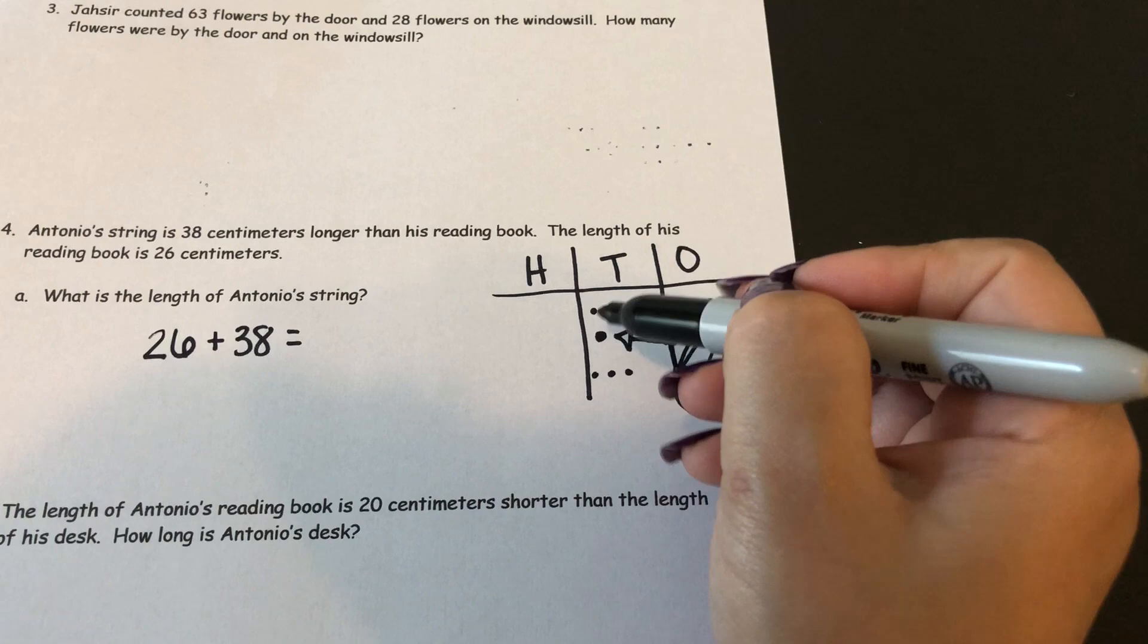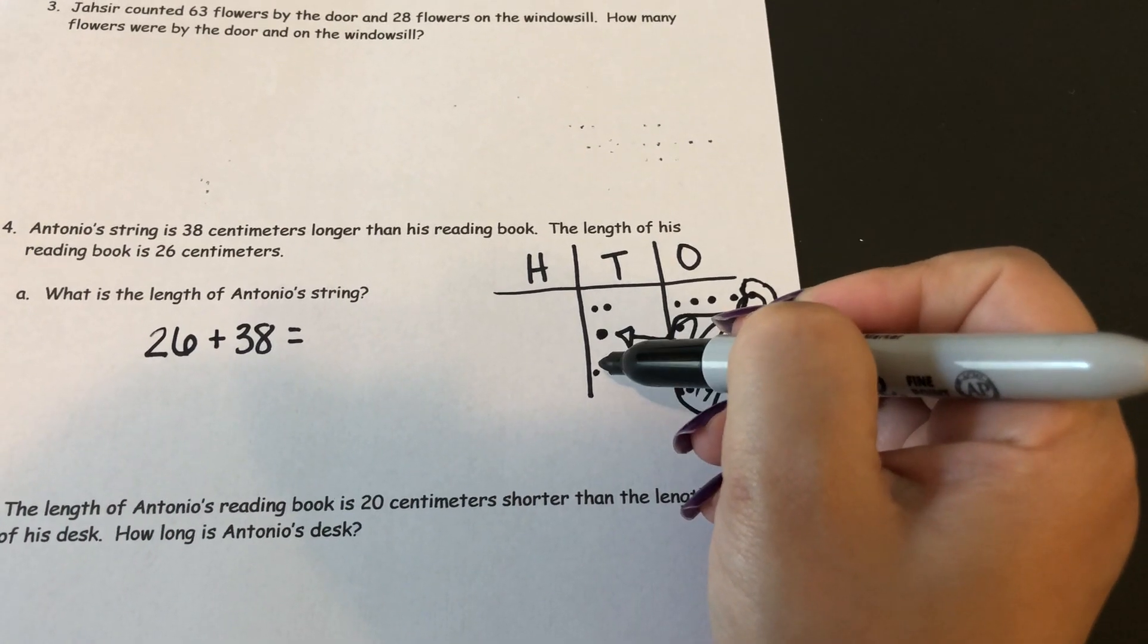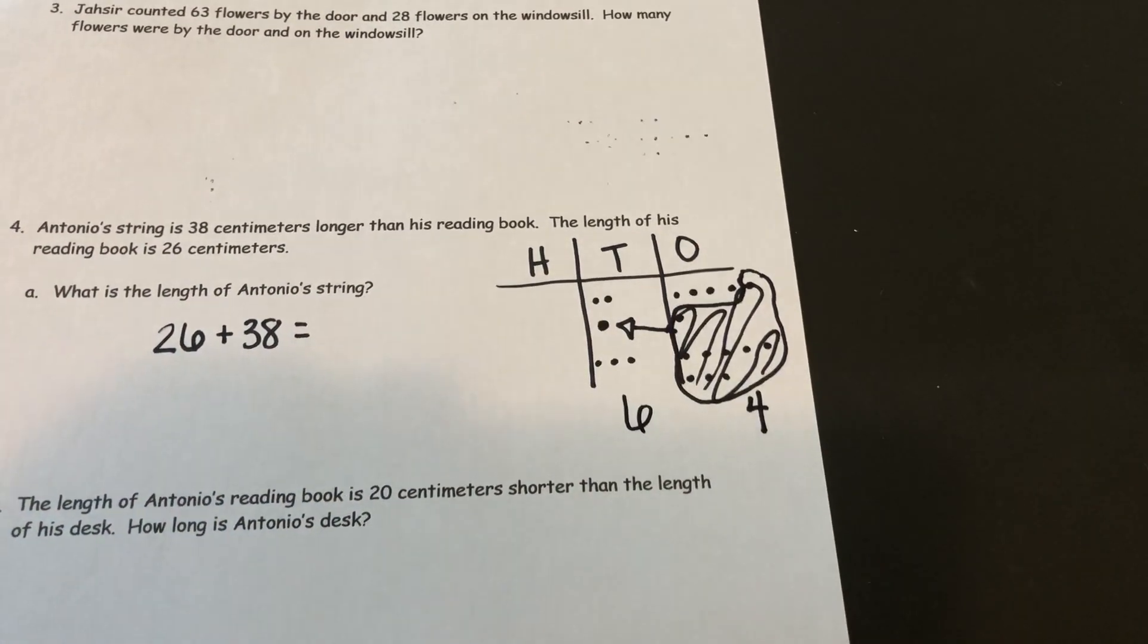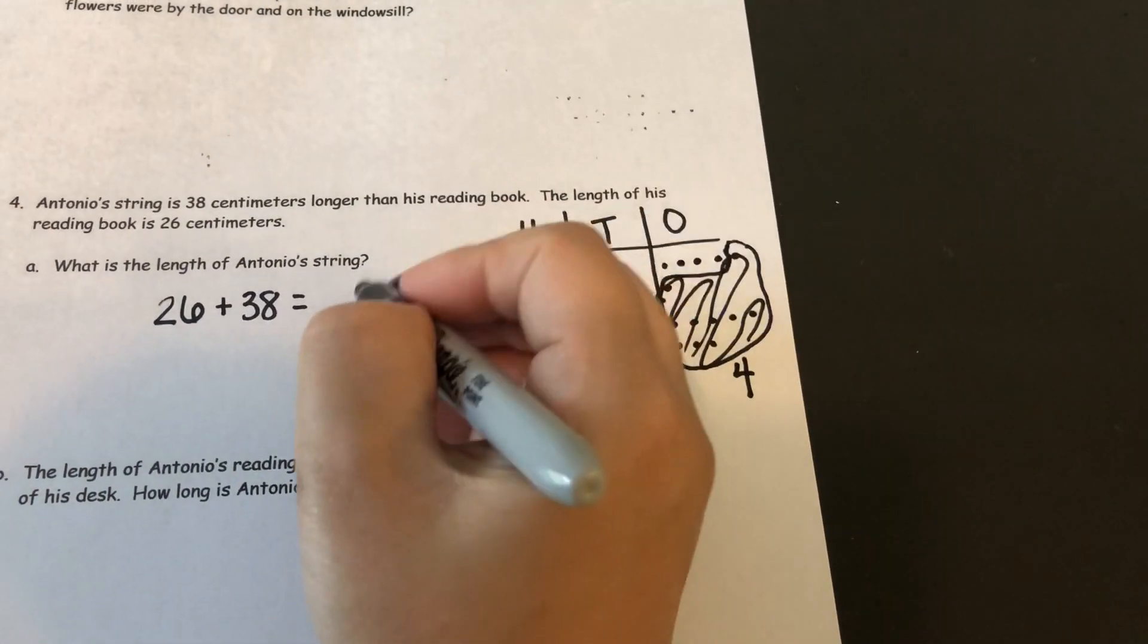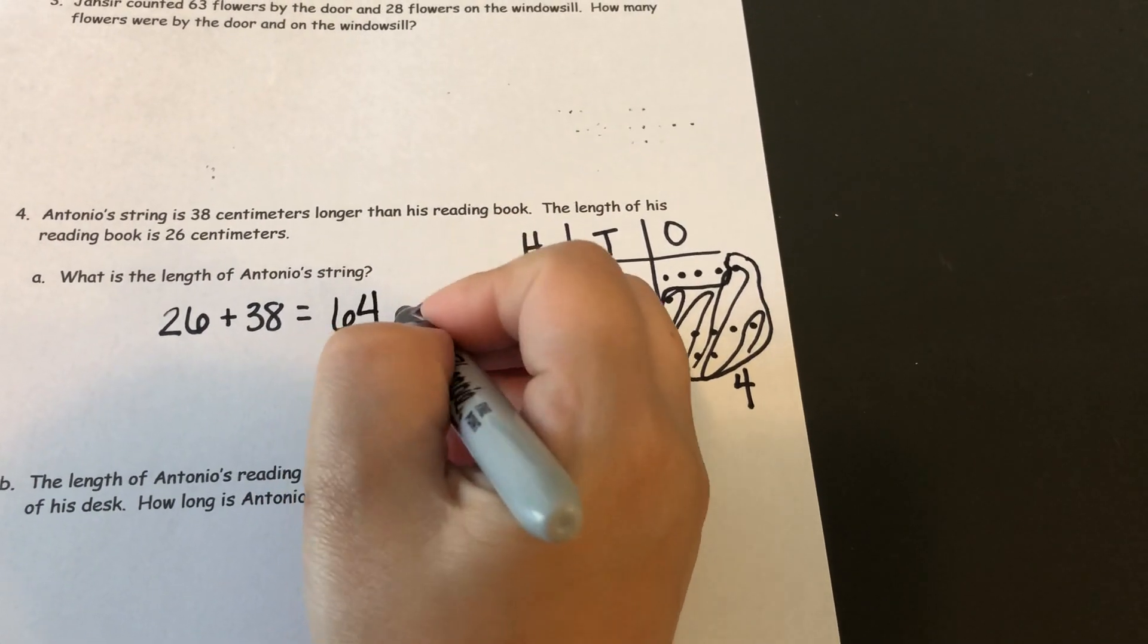And looking at my tens I've got 1, 2, 3, 4, 5, 6 tens. So I know the length of Antonio's string is 64 centimeters.